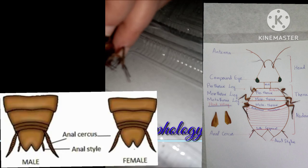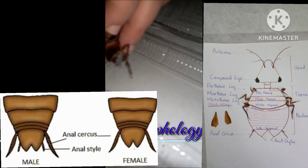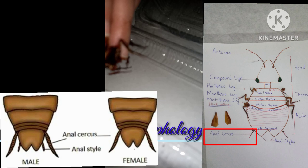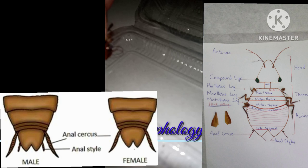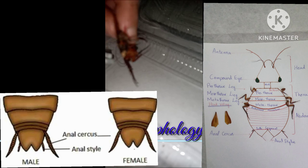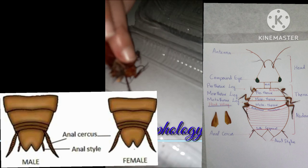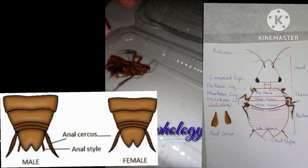The last segment also has anal cerci. As you can see, there is only anal cerci and no anal styles, which means it is a female cockroach, because anal styles are present in male cockroaches.